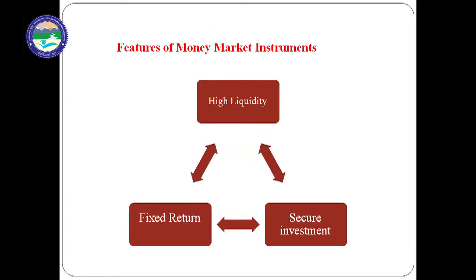Next are the features of money market instruments. First is high liquidity. One of the key features of these financial instruments is the high liquidity offered by them. They generate fixed income for the investors, and short-term maturity makes them highly liquid. Because of these characteristics, money market instruments are considered as close substitutes of money.